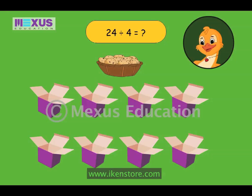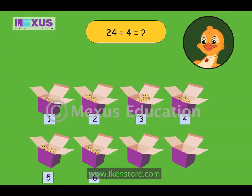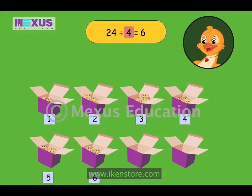In other words, you will have to divide 24 by 4. By making equal groups of 4 cookies, we know that 24 cookies can be put into 6 boxes. So, 24 divided by 4 is 6.